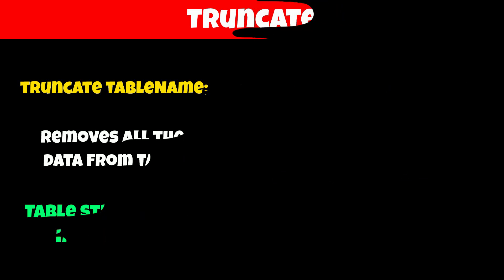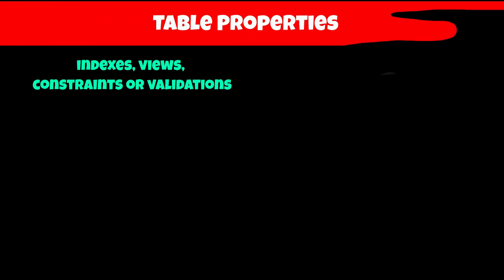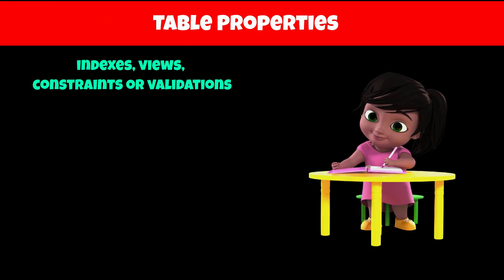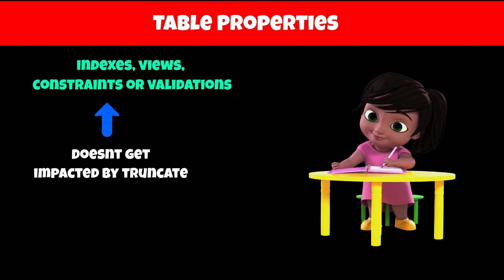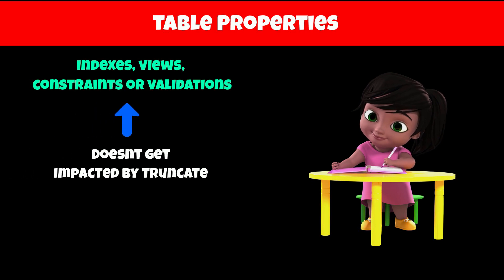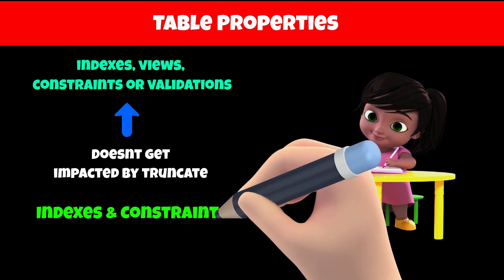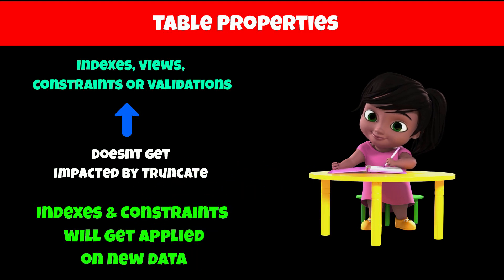But what happens to the properties of a table such as index, views, constraints, or validation? The TRUNCATE command does not affect the table properties such as table indexes and constraints. So when we add new data to the table, the old constraint or validation will be applied to the new data.